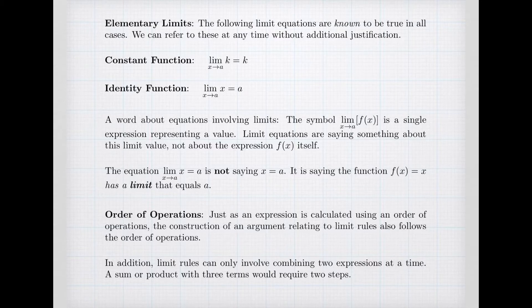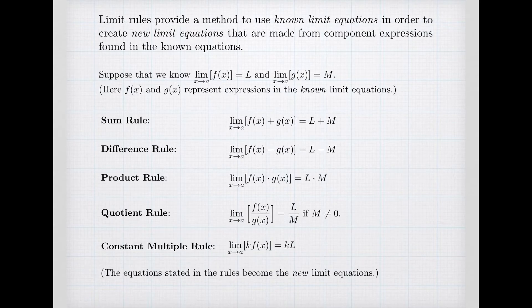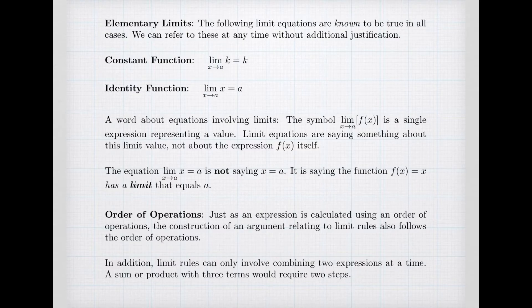The last thing that I want to say before we get to our example: order of operations. When I'm thinking about constructing an argument, I'm going to base it on the same order of operations that the original expression uses in order to calculate. Secondly, a limit rule can only combine two expressions at a time. Each of the limit rules only involves two expressions—a sum, a product, a quotient. And so as I get to limit rules using combinations, I can only build two steps at a time when I use limit rules. Anything that involves three terms would require at least two steps.